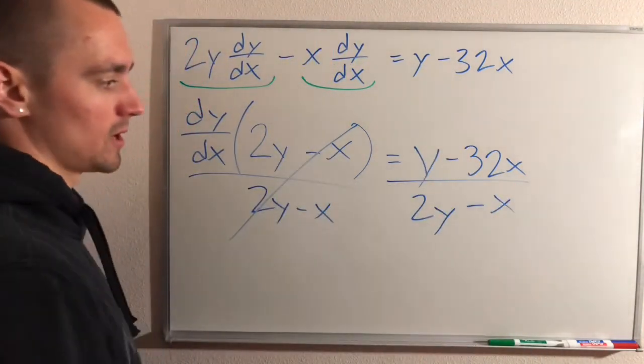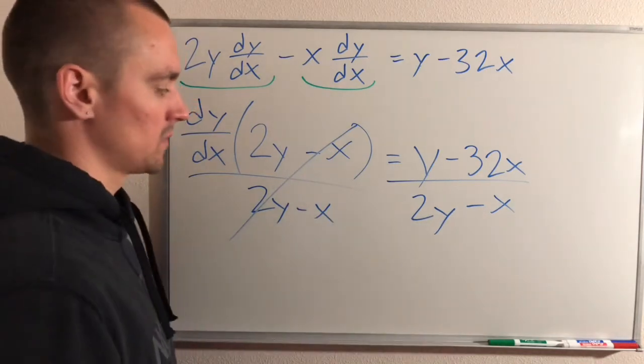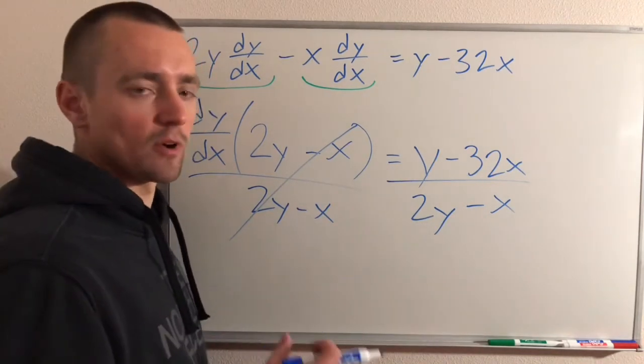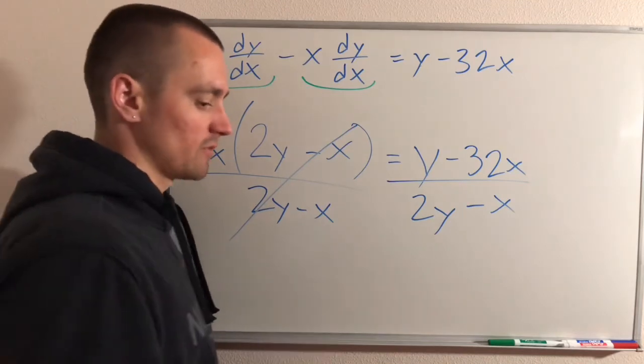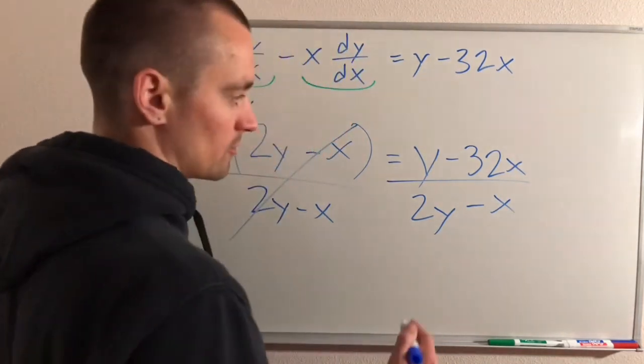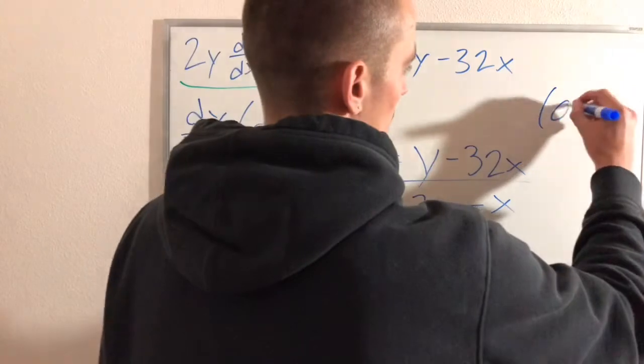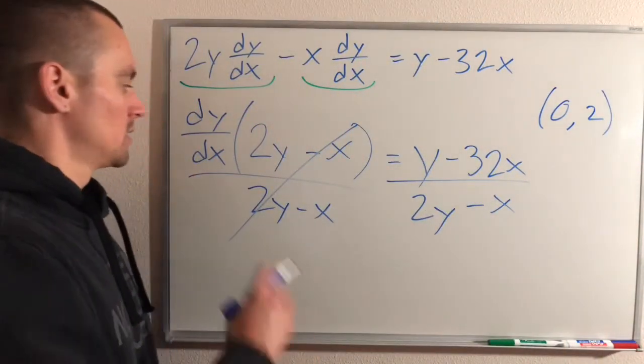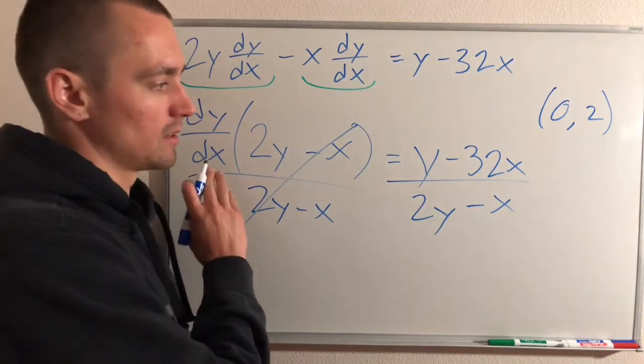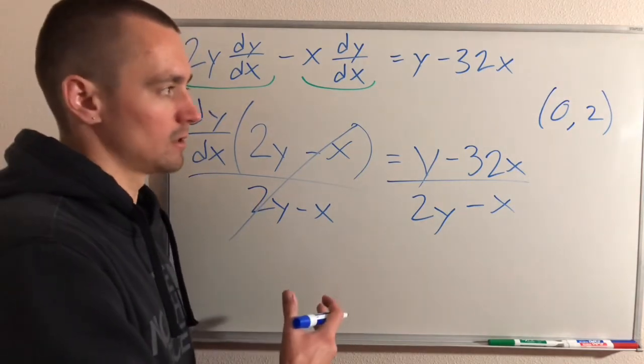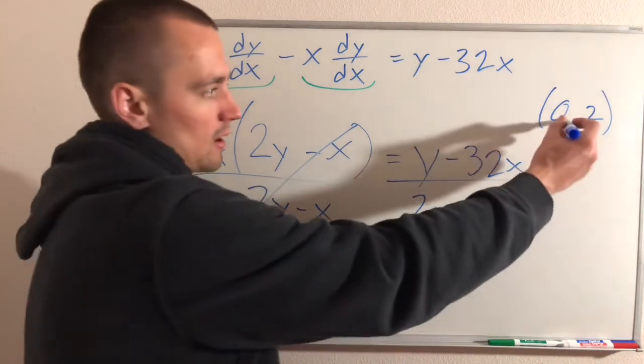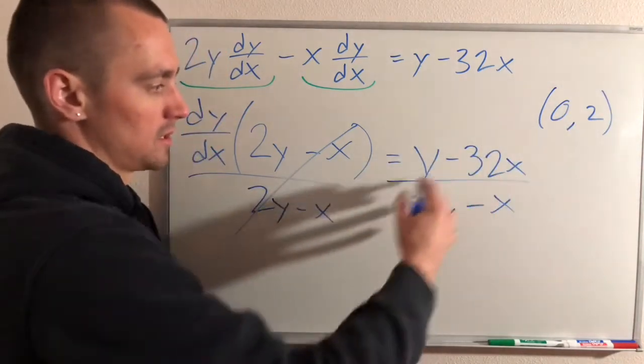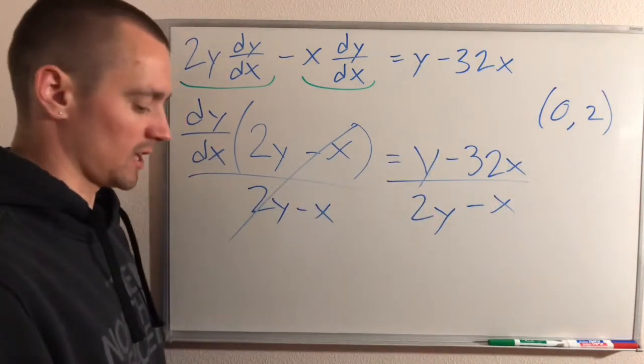Now dy/dx equals y minus 32x over 2y minus x. Okay, so the reason why we were doing this was to find the slope of our tangent line, specifically at the point (0,2), right? So we need to make sure that we're finding the slope at the point (0,2). So dy/dx tells us exactly the slope of our curve that we were given. All we have to do is plug in our xy combination into this equation to get the slope of our tangent line.